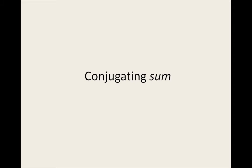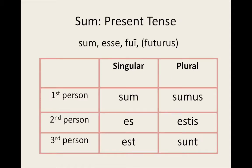Now let's conjugate 'sum' in the present tense. Sum — I am. Es — you (singular) are. Est — he, she, it is. Sumus — we are. Estis — you (plural) are. Sunt — they are.